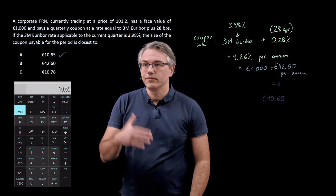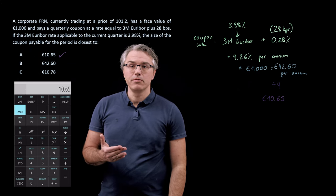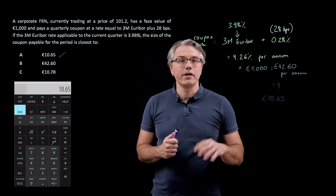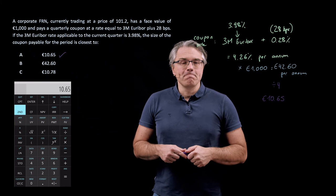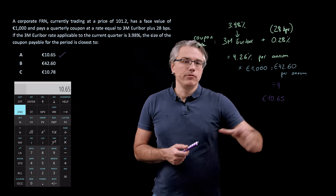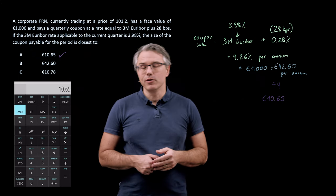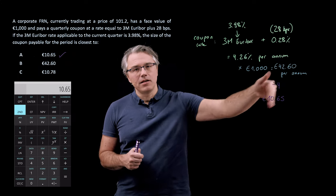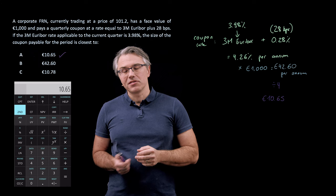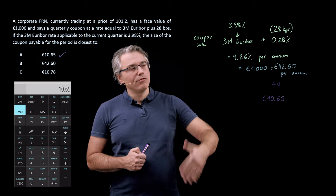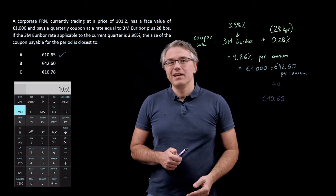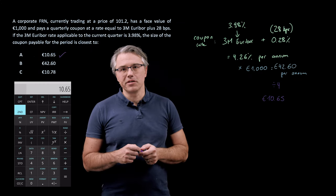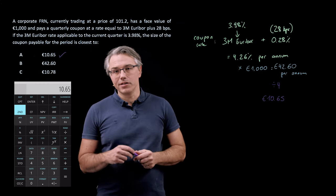It's not as if this coupon stays fixed for the whole year and gets paid as $10.65 four times in a row. We update this every quarter. So even though we say per annum here, it's only for the purposes of computing the quarterly coupon, which changes every three months as we get an updated reading of three-month EURIBOR.